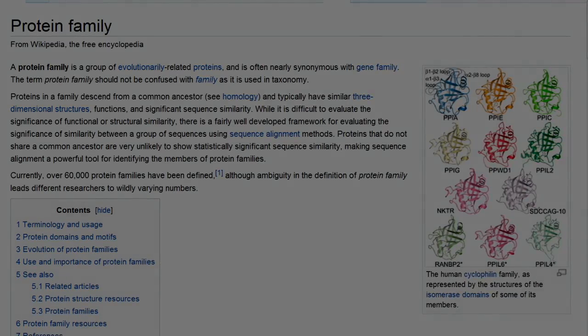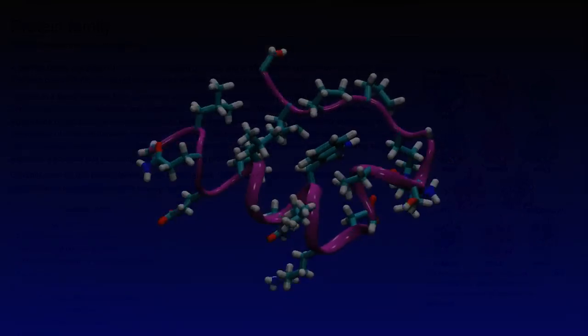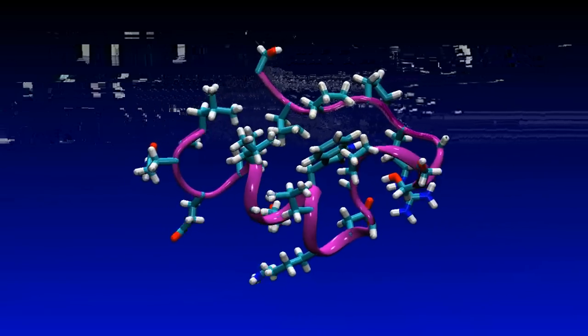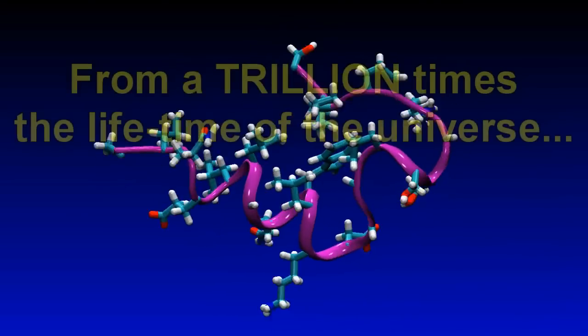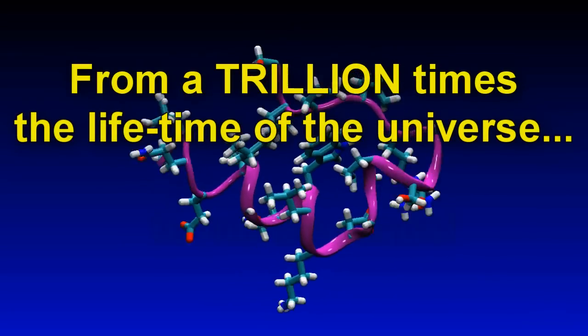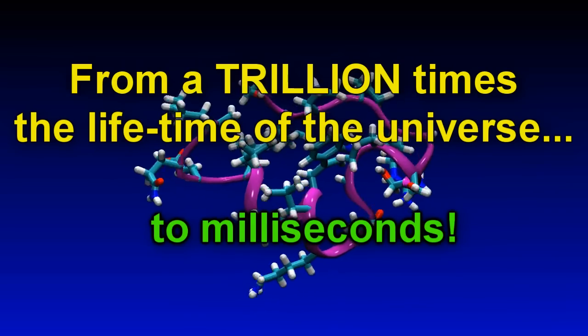So that's a quick summary about proteins. In the next part, we'll find out about protein folding and how it's possible for a protein which would be expected to take well over a trillion times the lifetime of the universe to find its folded state at random can actually do it in about a thousandth of a second.